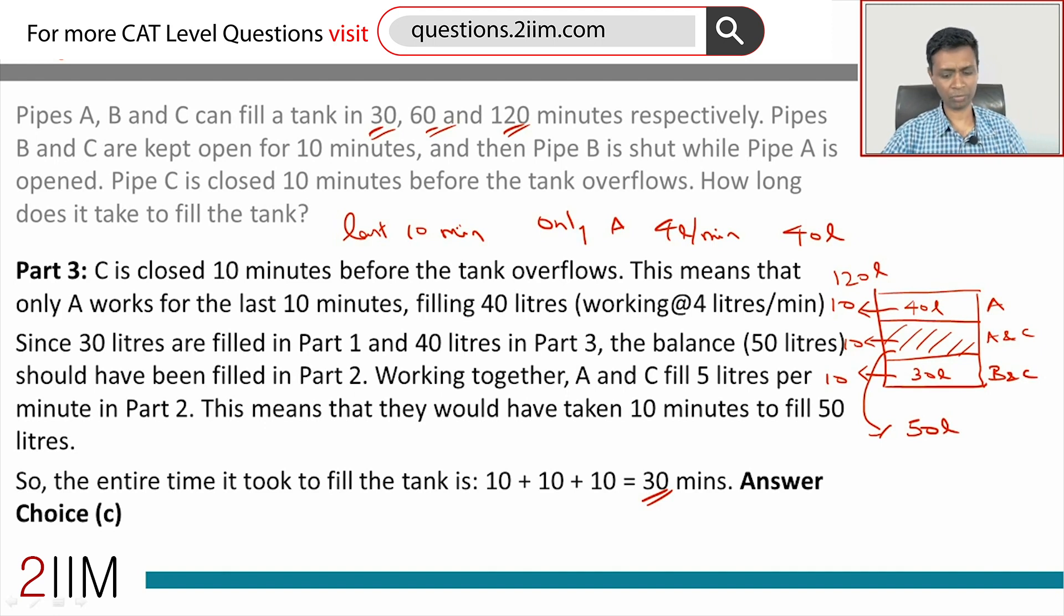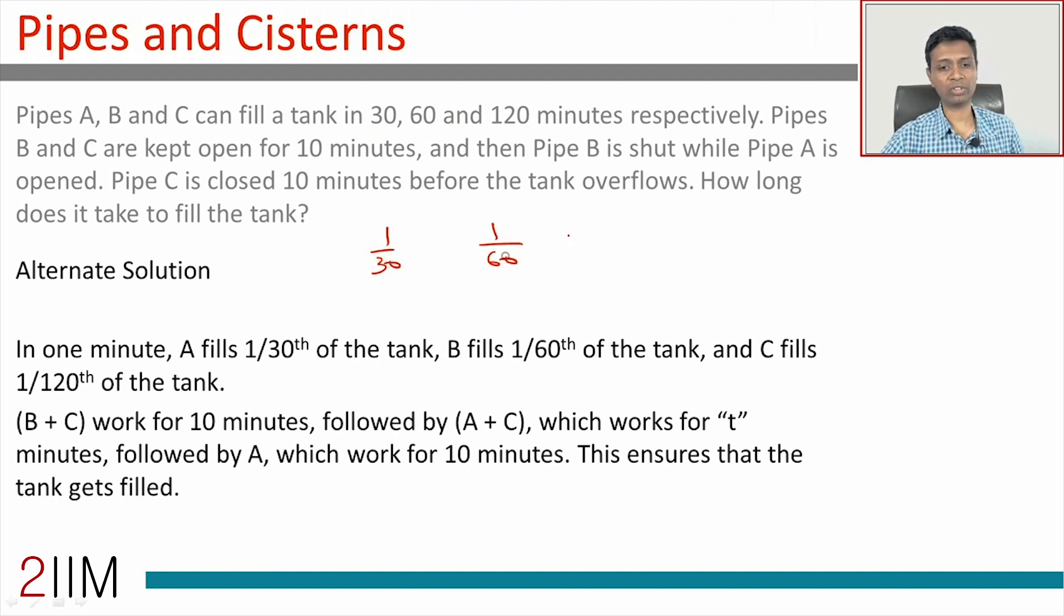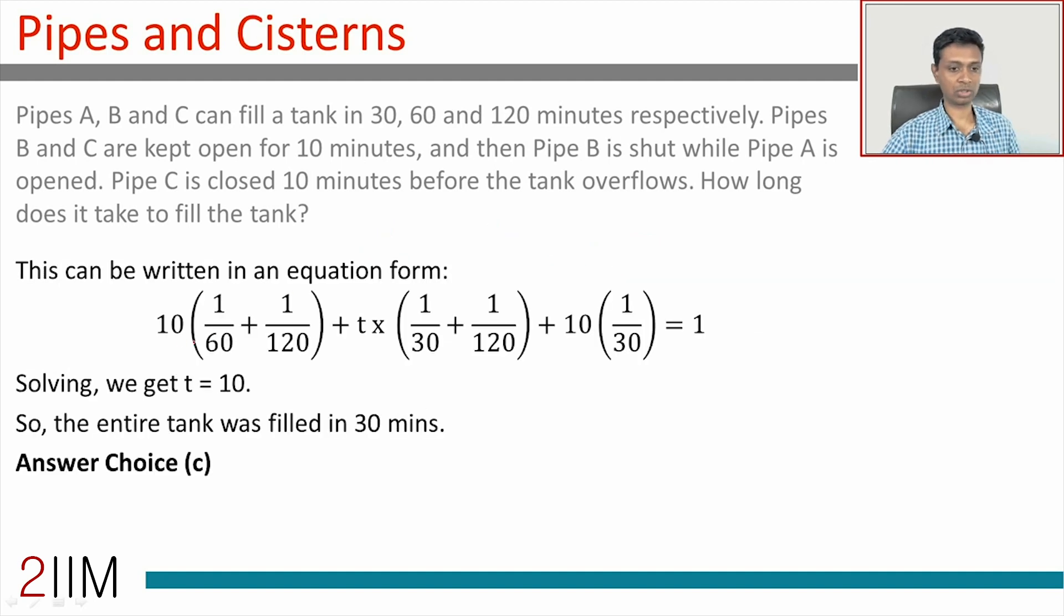What is the other method of doing this? In 1 minute, A will fill 1/30 of the tank. In 1 minute, B will fill 1/60 of the tank. In 1 minute, C will fill 1/120 of the tank. For 10 minutes, B and C operate together—just 10 minutes, 1/60 plus 1/120. For some time, A and C operate together. Final 10 minutes, only A operates. So the total tank filled is 1. Use this to find the time. This is the algebraic way of doing it—by thinking how much of the tank gets filled in 1 minute and then building from there.